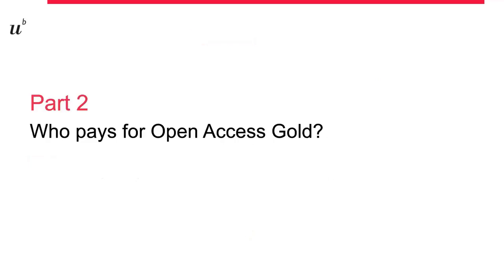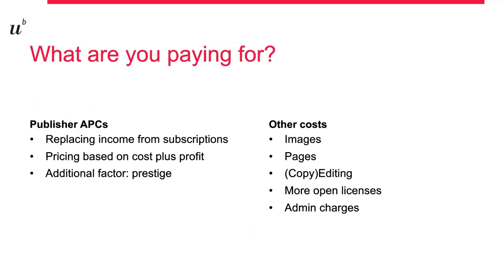We will now focus on the gold and hybrid roads and the questions around APCs. The APC model emerged with the rise of open access, as publishers wanted to address their fading subscription revenues. APCs are charged to cover the costs associated with the publication process like editing, hosting, archiving, etc. But to these effective costs, a profit margin is added. These margins vary, especially according to the prestige of a journal.